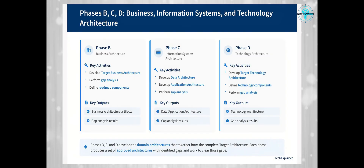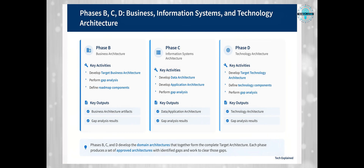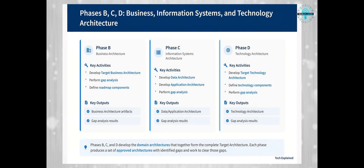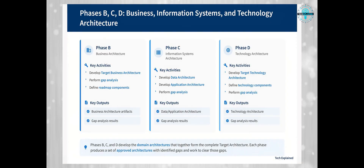Phase D is Technology Architecture, where you develop the technology architecture that supports the information systems architectures. This includes the hardware, software, and network infrastructure needed to support the applications and data. It answers: what technology do we need to make it all work? These three phases together create a comprehensive target architecture that addresses business, information, and technology aspects of the organization.